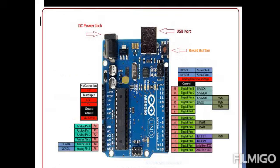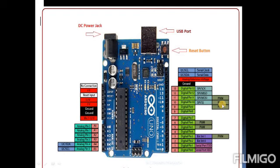Looking at the pin configuration: it consists of 14 digital pins and 6 analog pins. Pins 3, 5, 6, 9, 10, and 11 provide PWM output — these 6 pins provide PWM output. It also has a USB port and a reset button. By pressing the reset button, we can reprogram the board. It also consists of 6 PWM outputs and 4 SPI pins useful for SPI communication.